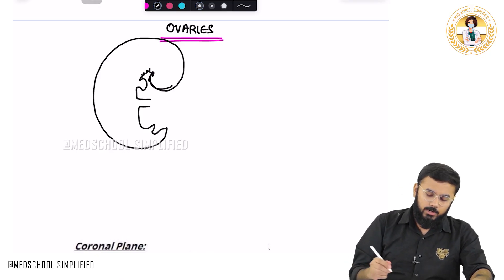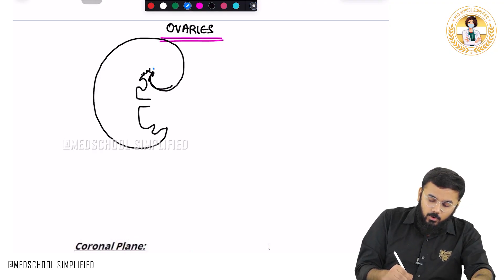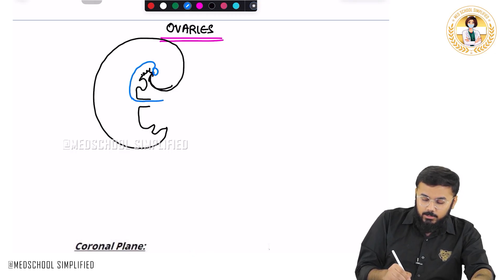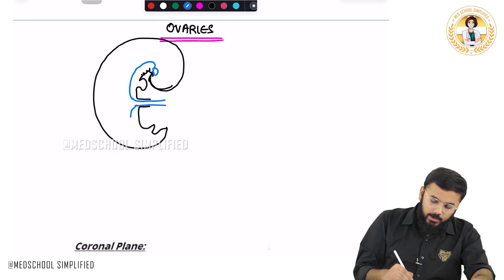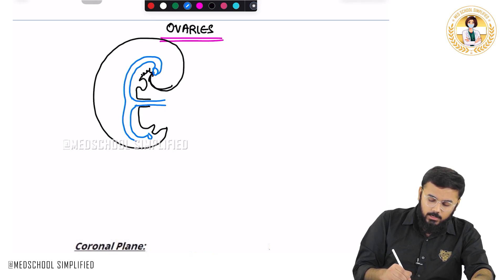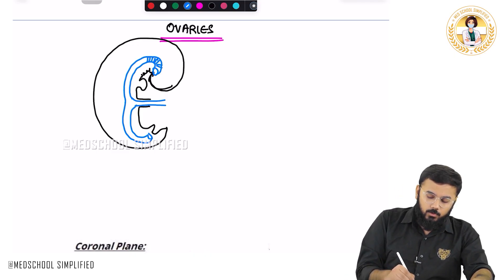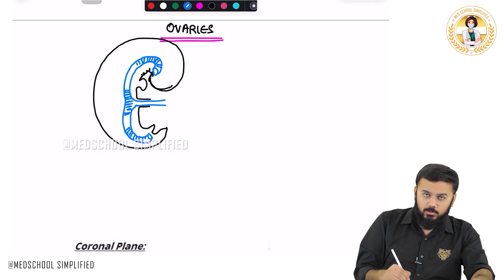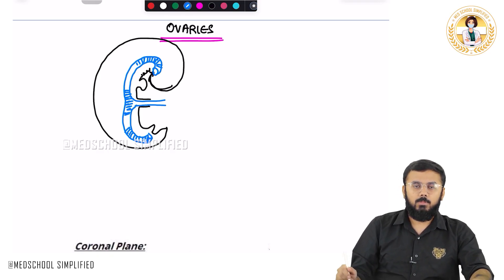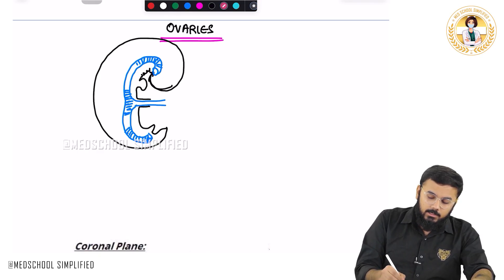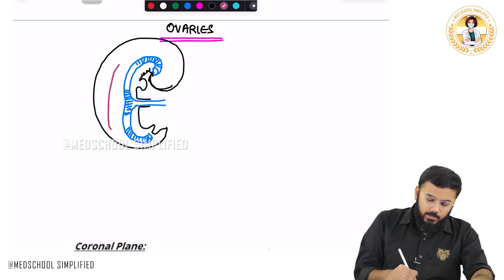Now here, another important thing which you need to know is that here you have got a structure called as foregut. Now from this foregut, you see a structure coming down — this particular structure is called as your midgut. And finally here you have got your hindgut. So foregut, midgut as well as hindgut — these are the structures located over here. Now behind this, if we draw a structure over here, this particular structure located behind this is what is called as your mesonephros.